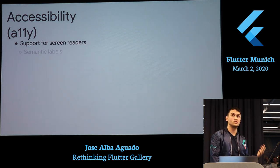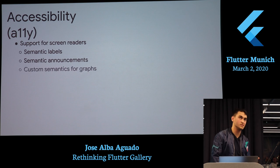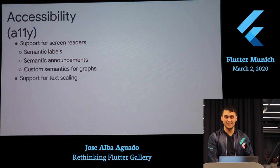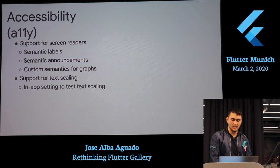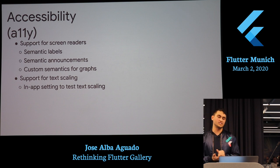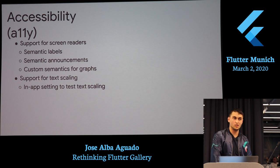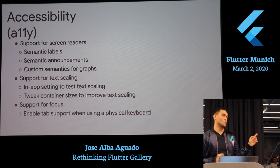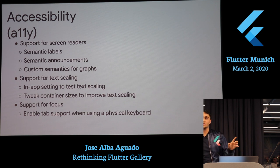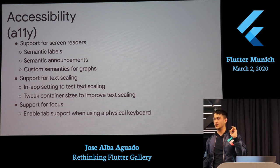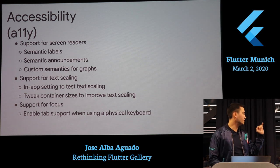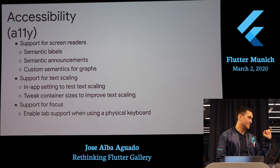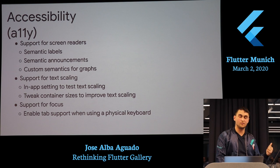Accessibility covers: support for screen readers, semantic labels, semantic announcements, custom semantics for graphs, and support for text scaling. We had to include all these features using the Semantics widget, which is another widget in Flutter. We also had to support focus — Focus is a Flutter widget that lets you tab between different widgets on desktop layout, similar to tabbing through a website.